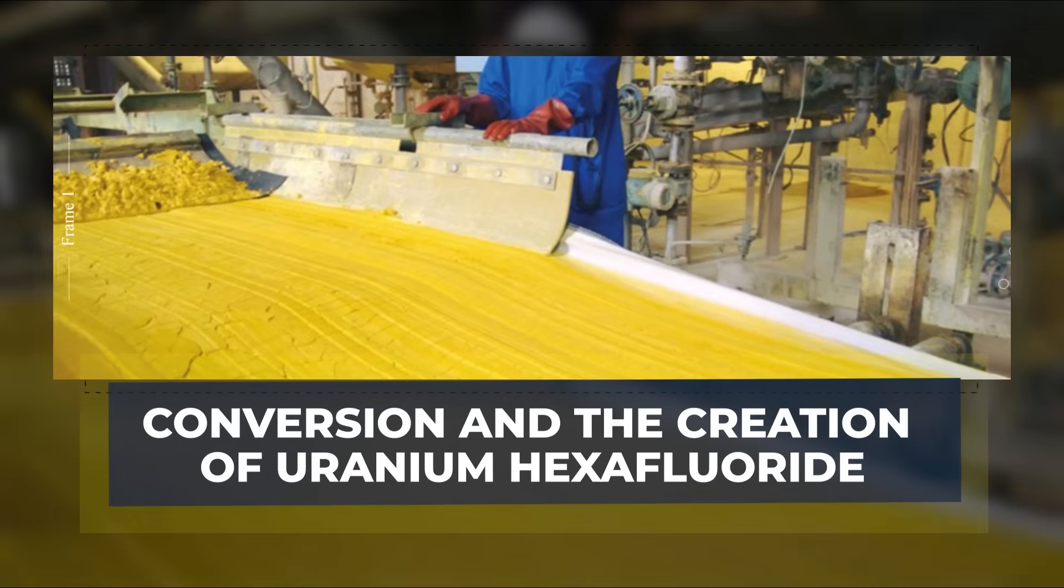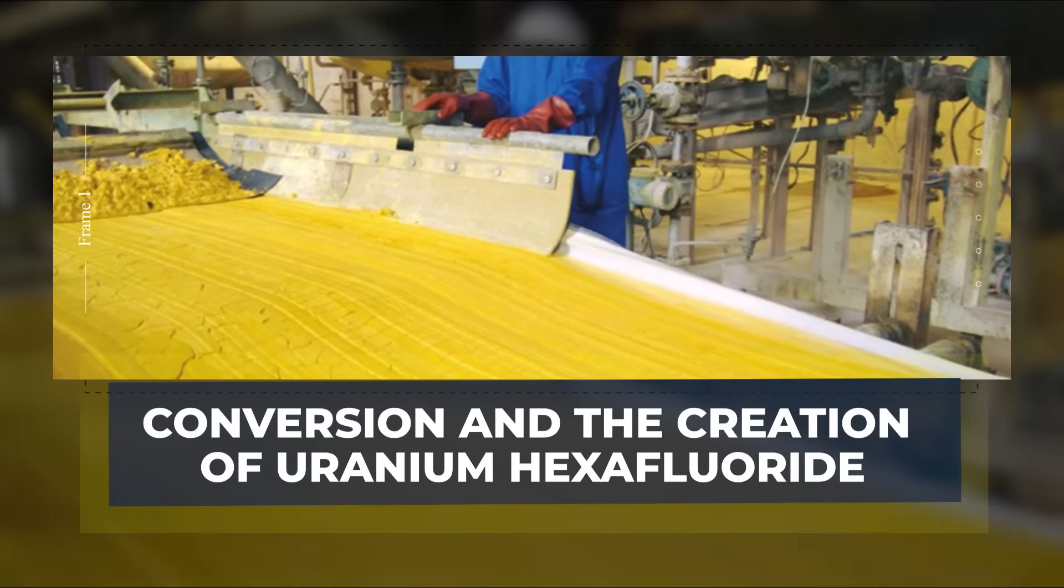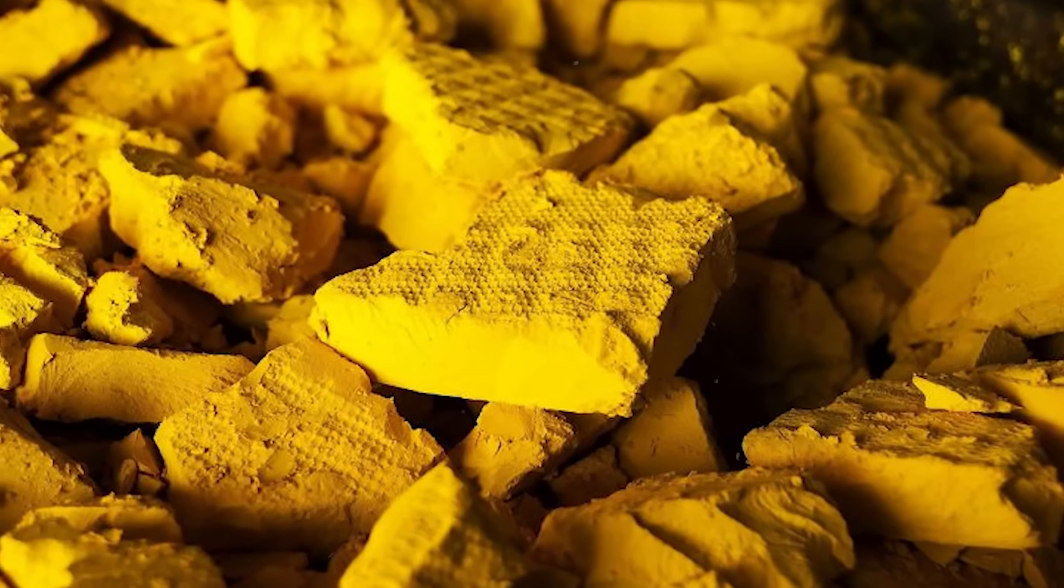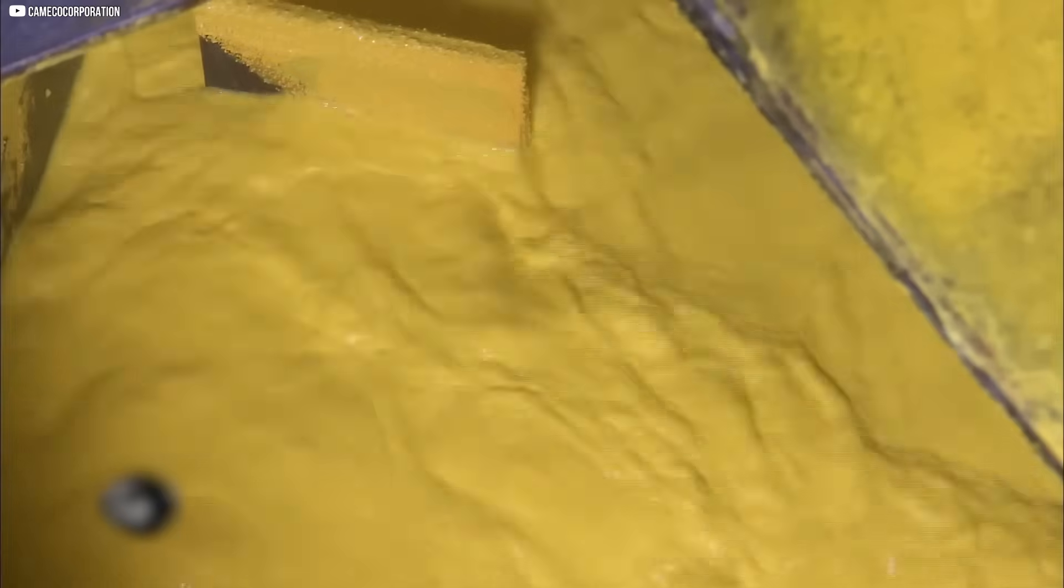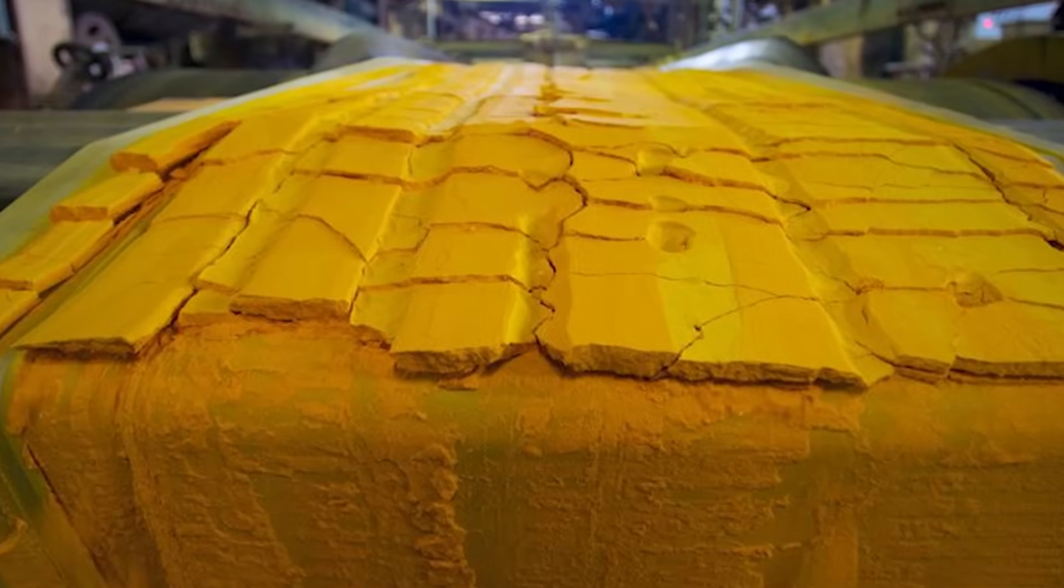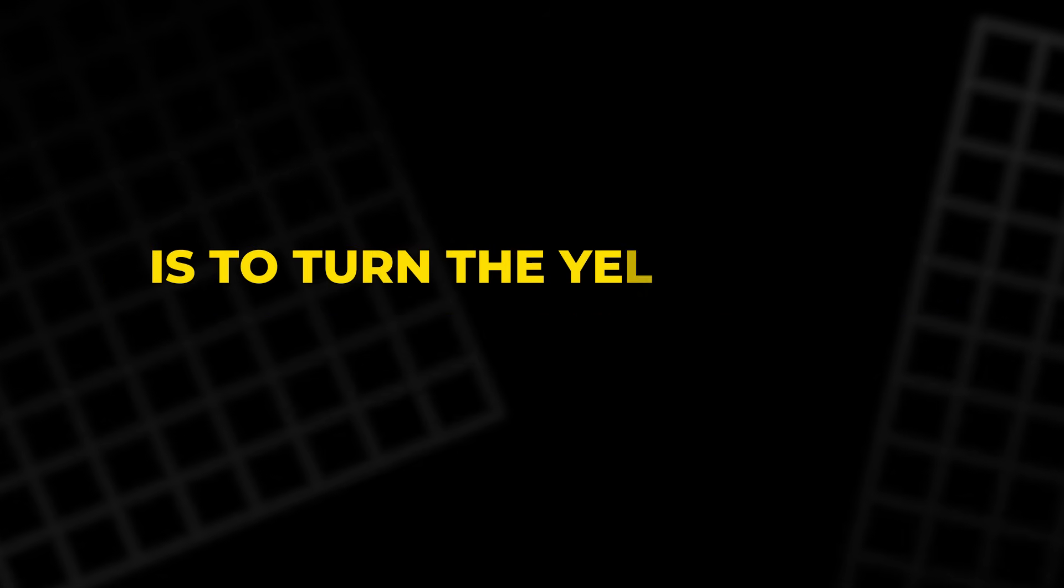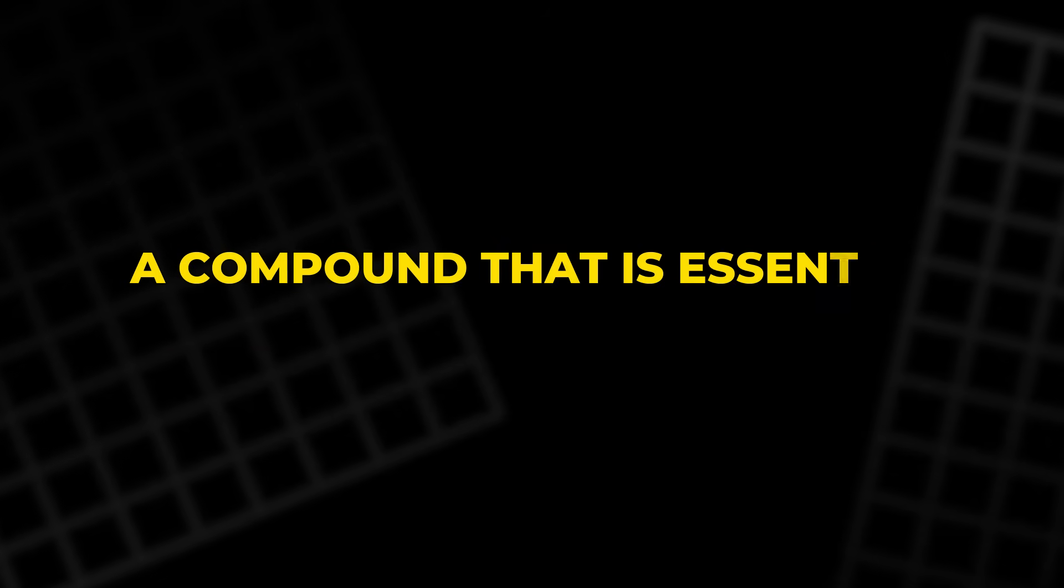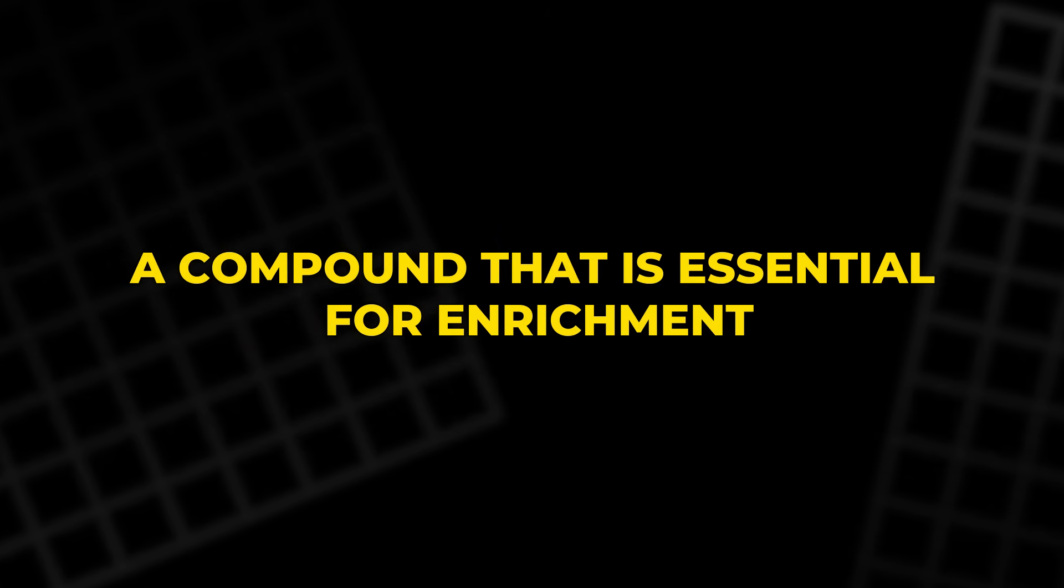Conversion and the creation of uranium hexafluoride. Once uranium is extracted and processed into yellowcake, it is ready for the next step in its transformation into nuclear fuel: conversion. The goal of this process is to turn the yellowcake into uranium hexafluoride, UF6, a compound that is essential for enrichment.